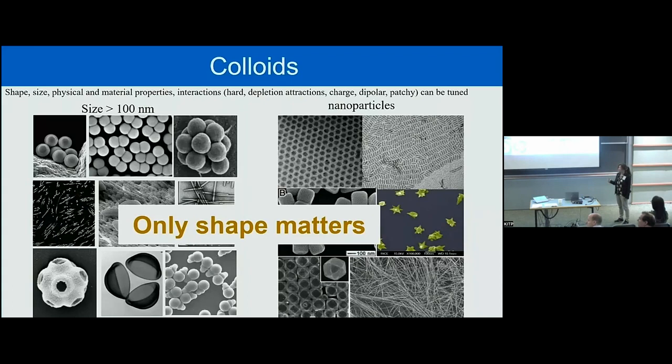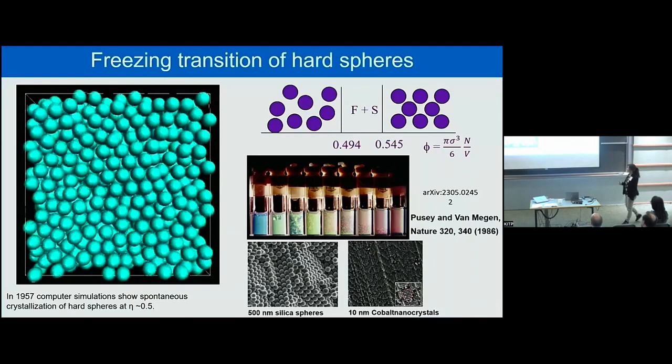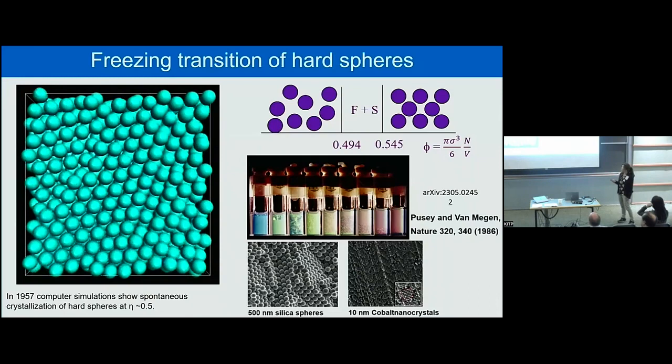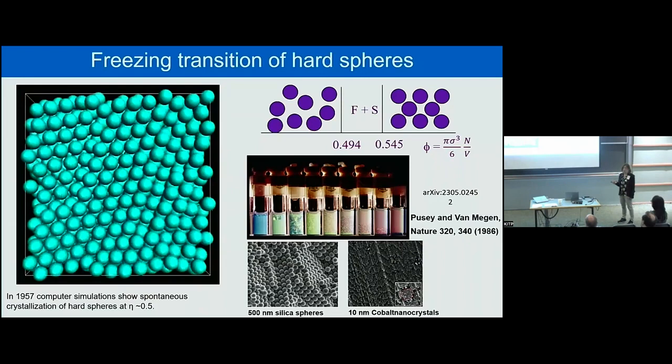You can often describe these particles with only excluded volume interactions. If you take the simplest shape — spheres — the earliest computer simulations in 1957 already showed a spontaneous crystallization from the fluid phase towards a pure crystal phase, purely driven by entropy alone. It took 30 years before colloid synthesis was accurate enough to make monodisperse spheres and show this freezing transition in PMMA spheres.